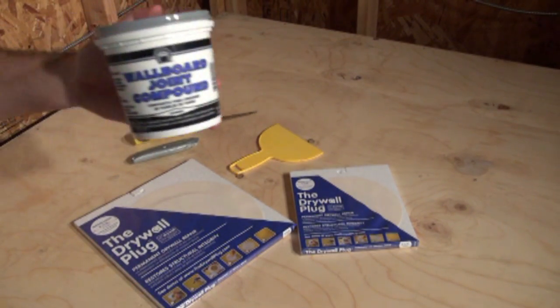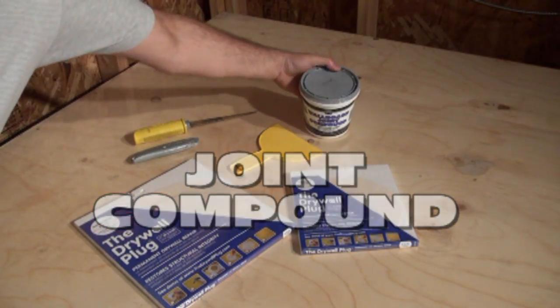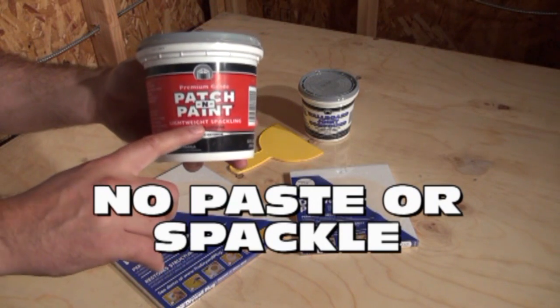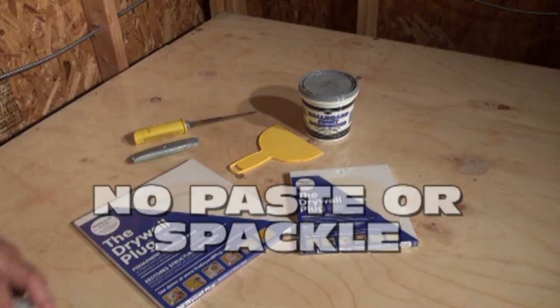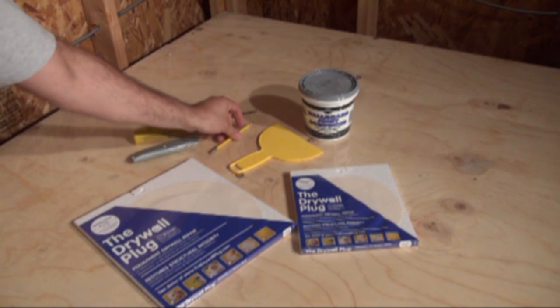You will need drywall joint compound. Make sure the container says joint compound. Do not use paste, spackling paste, or lightweight compound. Make sure you have a writing tool like a pencil, pen, or crayon.